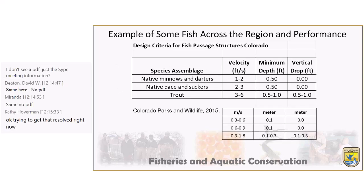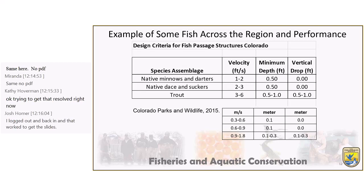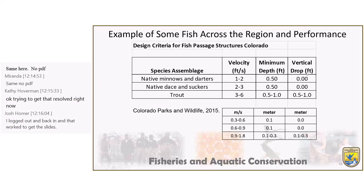Some examples of performance aspects — I like this one from Colorado Parks and Wildlife in 2015. It shows clearly the differences we work through: non-salmonids like minnows, darters, daces, and suckers have about half the velocity capabilities that trout and salmonids have. This is burst velocity. The other aspect is the vertical drop — the jump ability of non-salmonids is about zero, while trout can jump, and that plays a huge role in the type of ramp you want to design in our region.